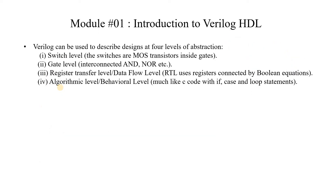There are four levels of abstraction used to describe a design. At the switch level, Verilog modeling describes the design using transistors like PMOS and NMOS acting as switches — this is called switch level modeling. At the gate level, we model the design using logic gates. If we model the design using Boolean equations, it is called data flow or register transfer level. The fourth type is behavioral level abstraction.